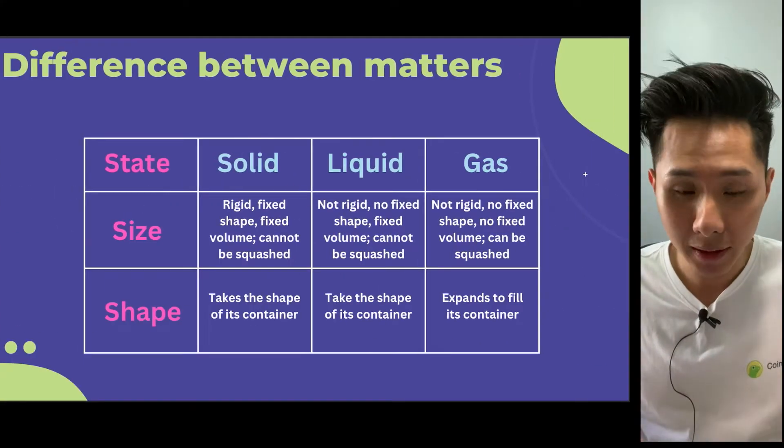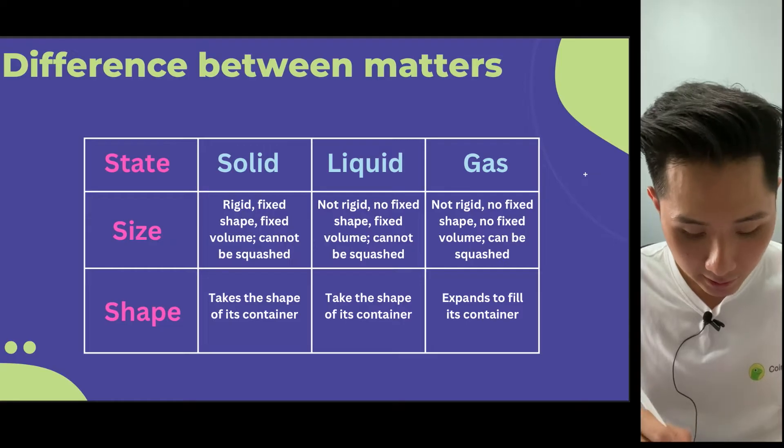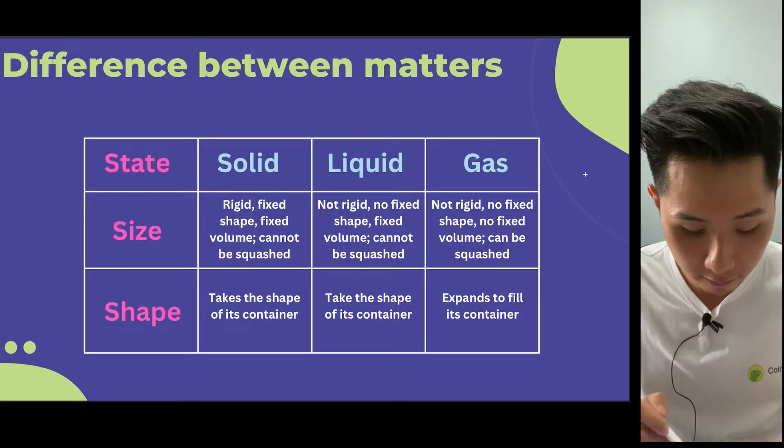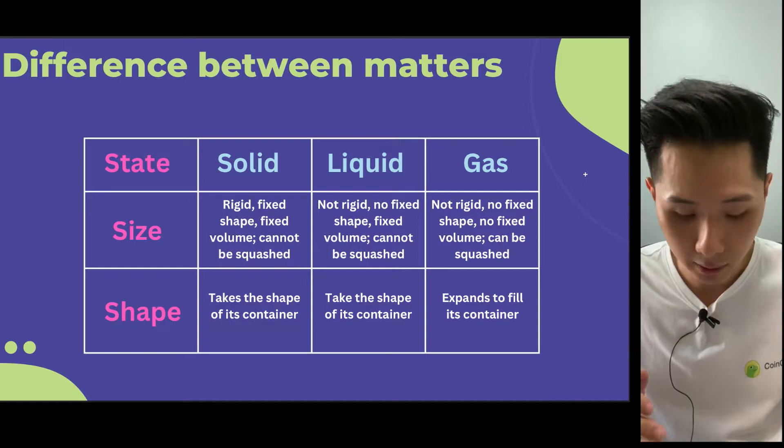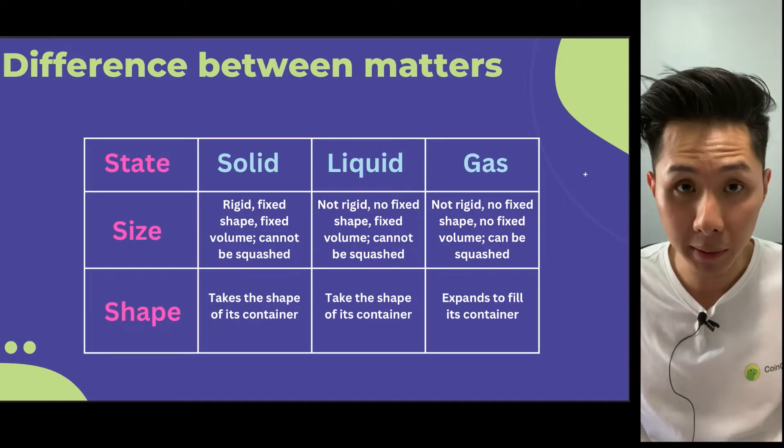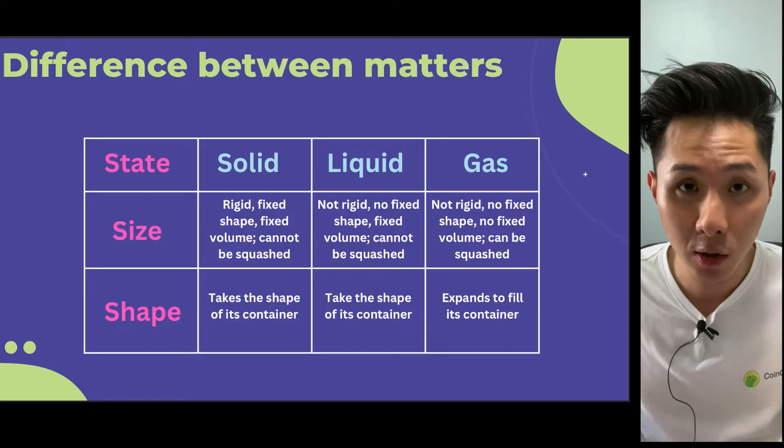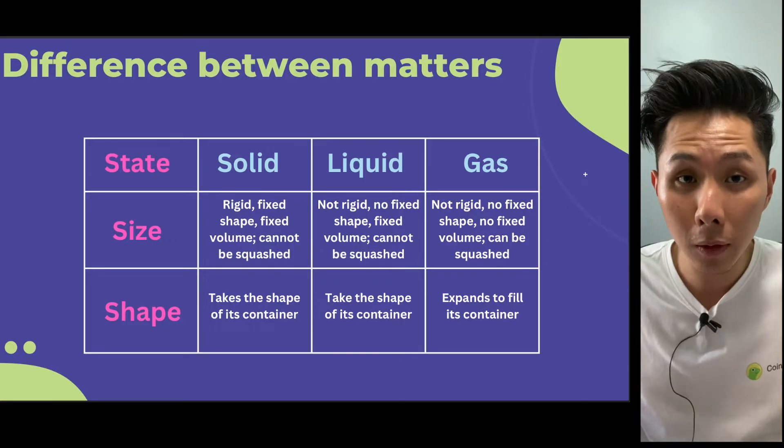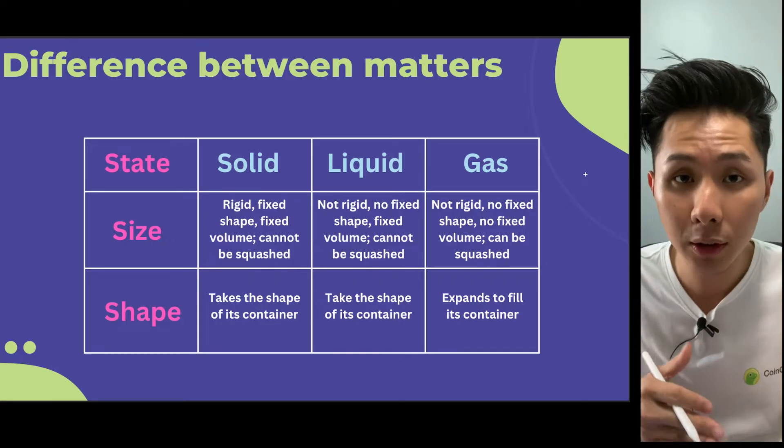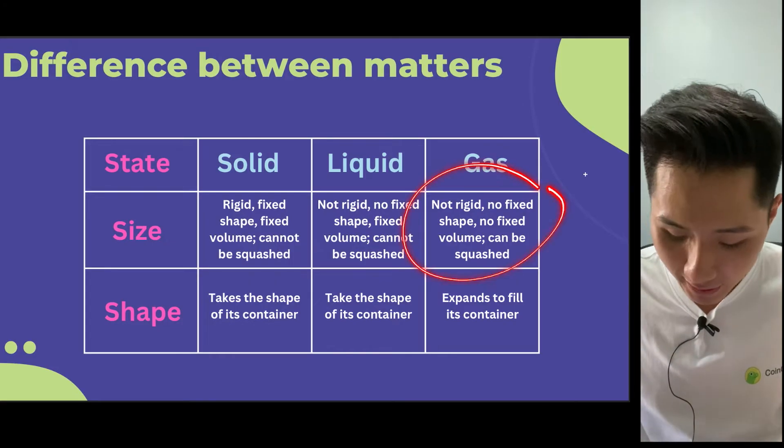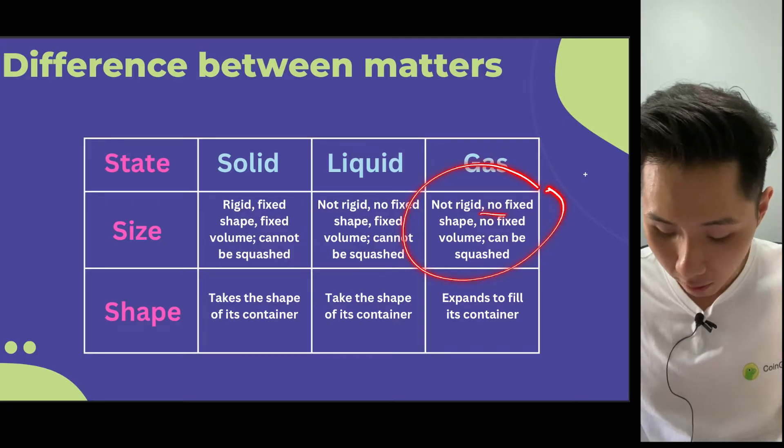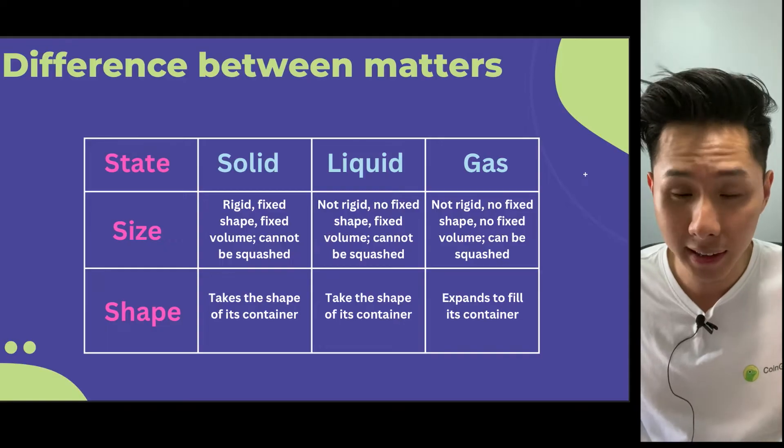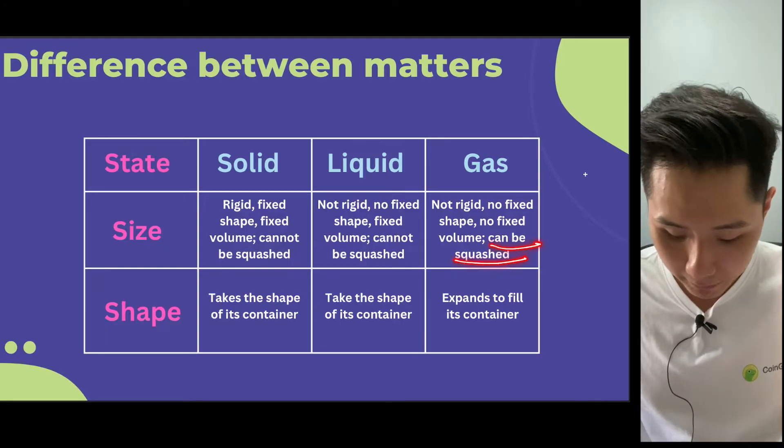And let's look into it. For the size, solid is often rigid with fixed shape and fixed volume. They cannot be squashed unless you exert a large amount of force on them. Whereas liquid is not rigid. Water will flow from one part of the container to the other. Whereas gas is not rigid, no fixed shape, no fixed volume. It can be as large as it can when the gas expands, and they can be squashed.